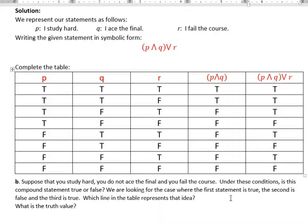We were looking for the case where the first statement is true, the second is false, and the third is true. So that was the third row. All right, and the truth value for that third row is true. So that's how you can read a truth table. That's how you can build a truth table. You need to do that for your fourth part of your logic packet. Have a fantastic day.